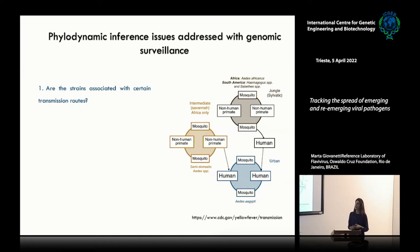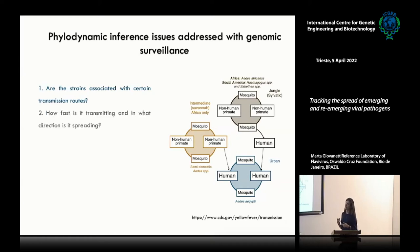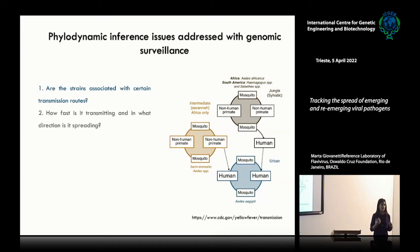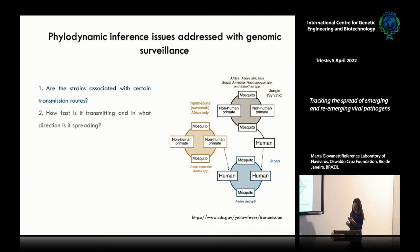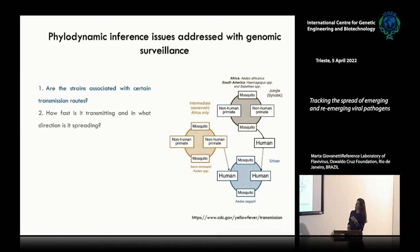For example, with the use of phylogenetic inference, we can be able to detect, investigate and understand if strains are associated with a certain transmission route. Here I am reporting the case of yellow fever virus. We know that yellow fever is composed of a really complex transmission dynamics. It includes the sylvatic jungle cycle as well as the urban one. In each one, we have several vectors — in the sylvatic cycle, Haemagogus mosquitoes play such an important role.